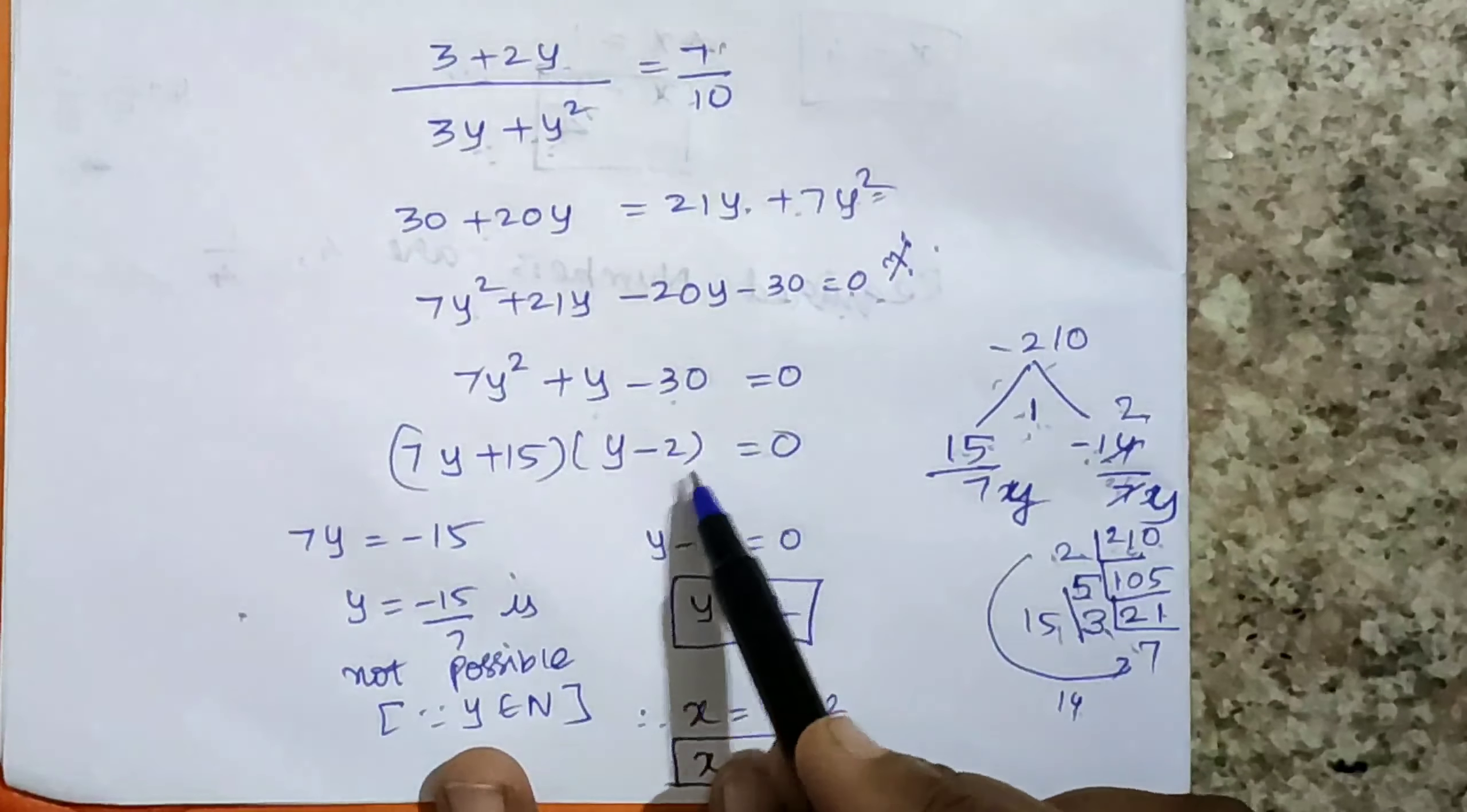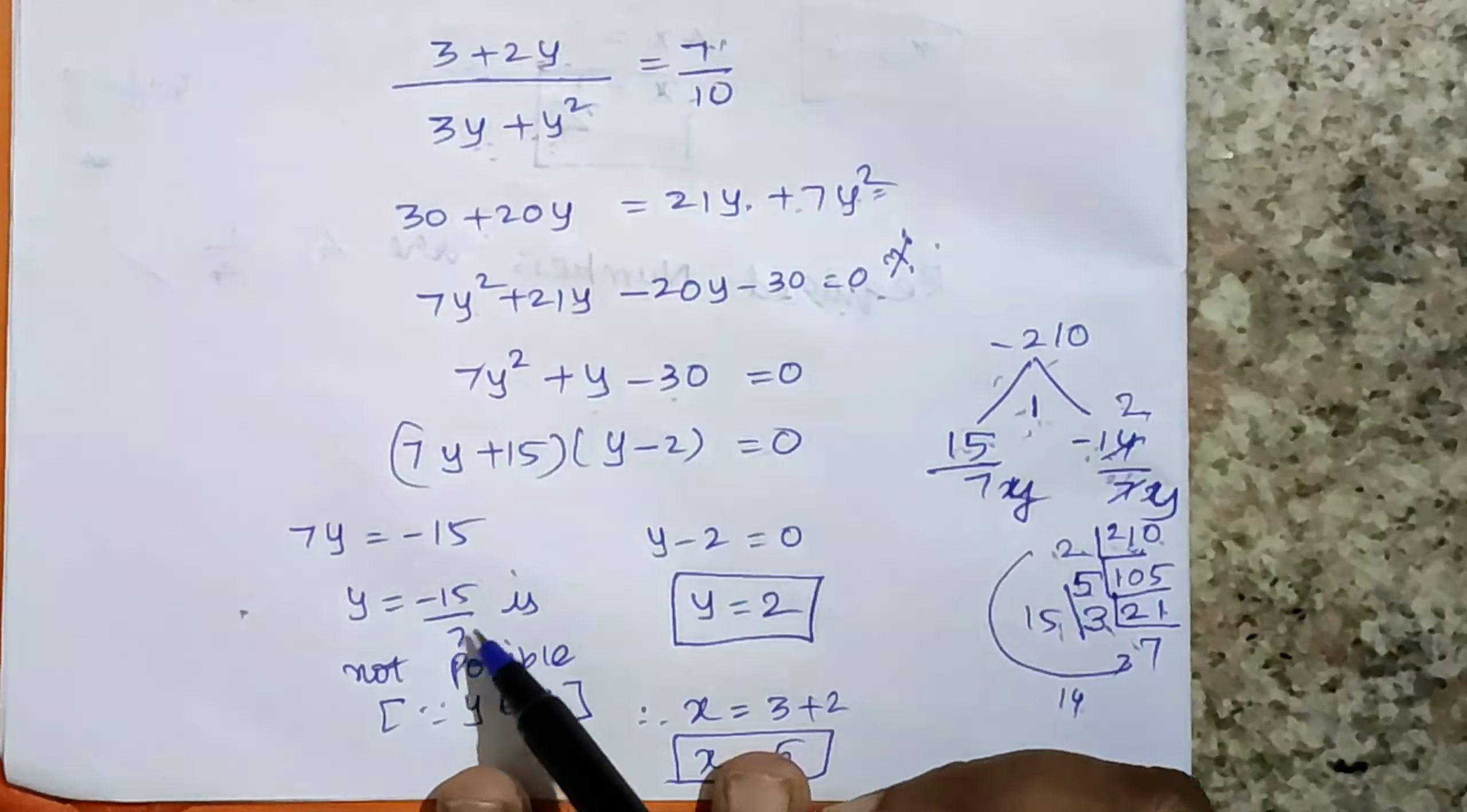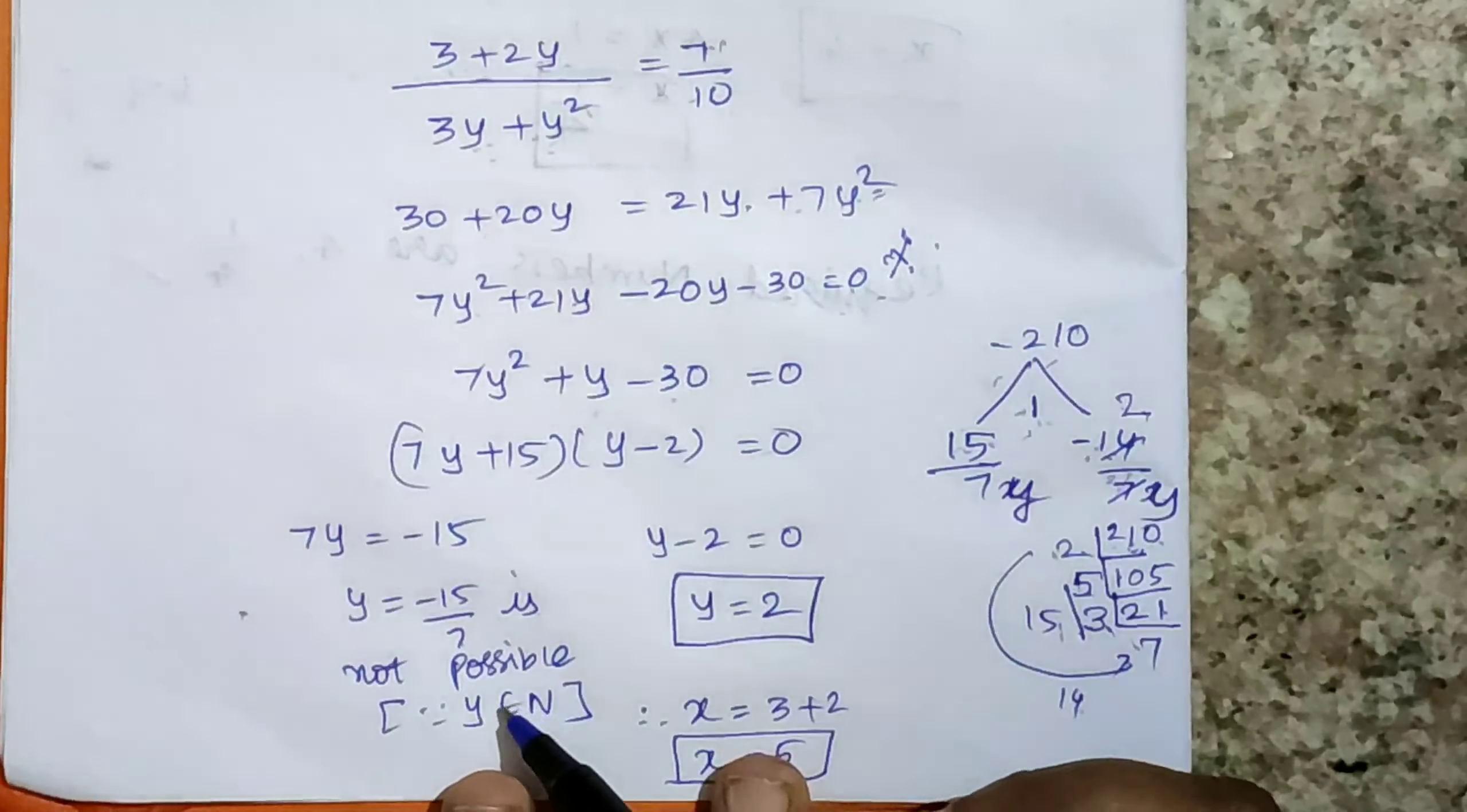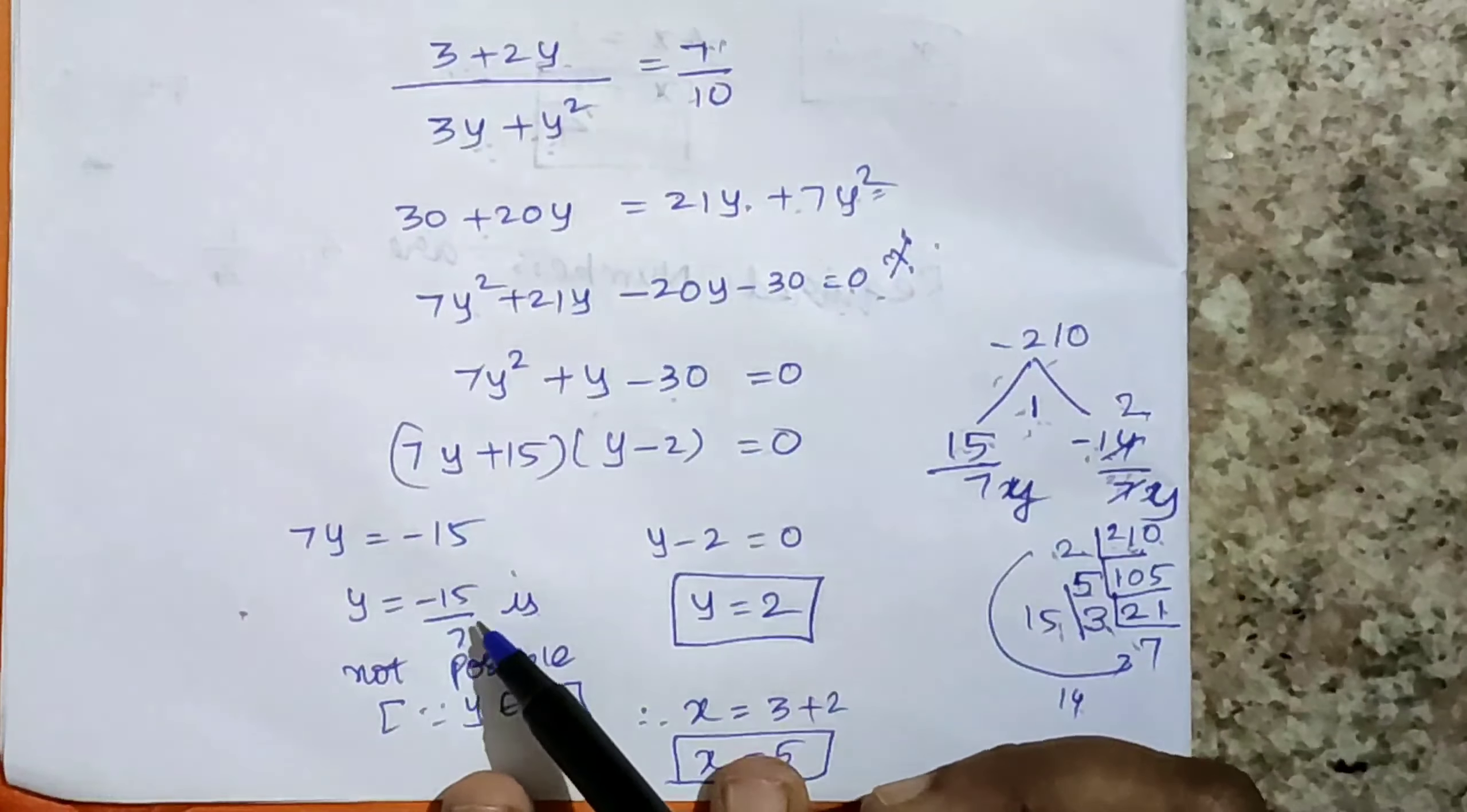7y equals negative 15, so y equals minus 15 by 7. This is not possible since y must be a natural number. So this is not a natural number.